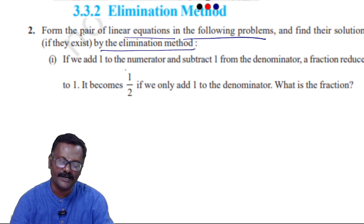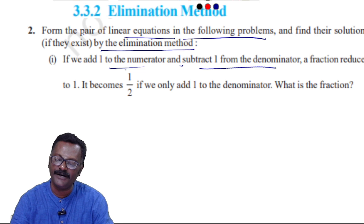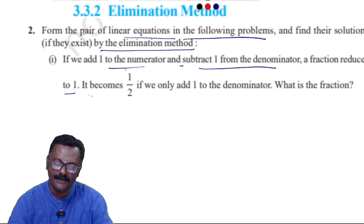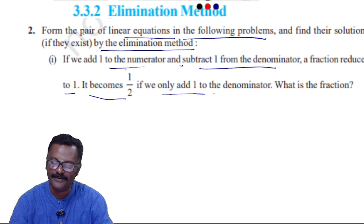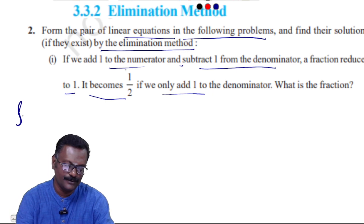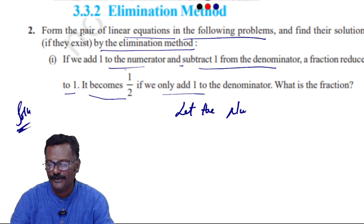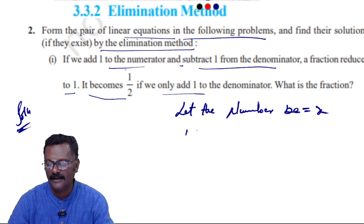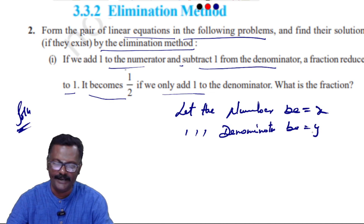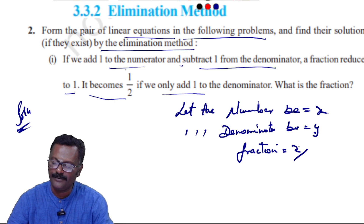First sub-problem: If we add one to the numerator and subtract one from the denominator, a fraction reduces to one. It becomes one. If we add one to the denominator only, the fraction becomes one by two. What is the fraction? Let the numerator be x and the denominator be y, so the fraction is x by y.